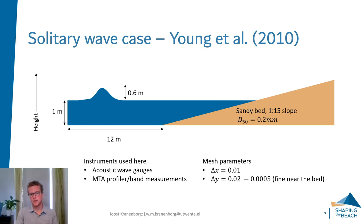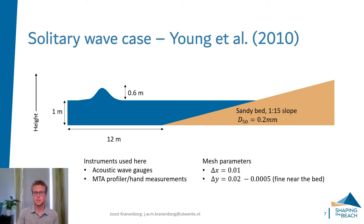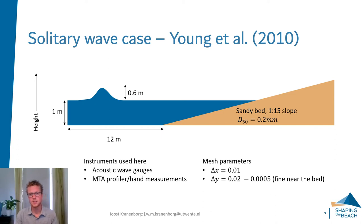The instruments we compare with are acoustic wave gauges for surface elevation, and there is also a profiler and some hand-measured profile information. For the numerical model we use a cell size of one centimeter in the cross-shore direction, and in the depth direction this ranges from two centimeters higher up in the water column to half a millimeter near the bed. This fine resolution near the bed is needed because the cell size must match the reference concentration height, which is also half a millimeter.